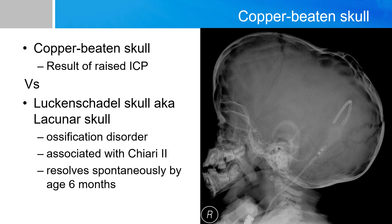This entity is not the same as another condition called lacunar skull (also known as lückenschädel). The lacunar skull is caused by abnormal collagen development and is an ossification disorder in which the fetal skull appears fenestrated with multiple oval lucencies separated by dense bony ridges on x-ray, hence the similarity to the copper beaten skull. Lacunar skulls are usually present at birth and are almost always associated with Chiari II malformations. Unlike the copper beaten skull, lacunar skulls have a good prognosis and typically resolve spontaneously by six months of age.